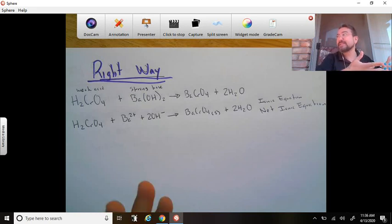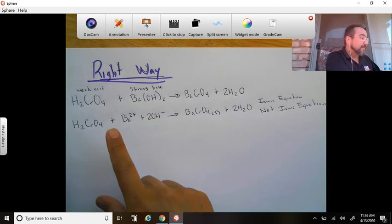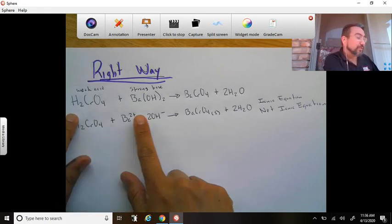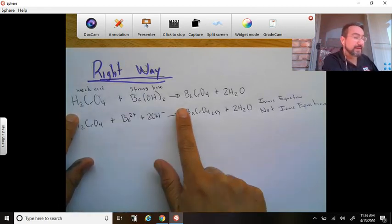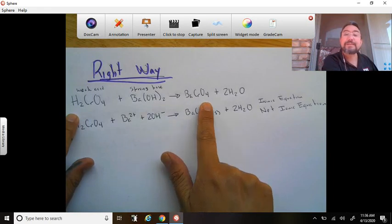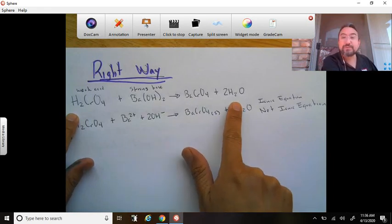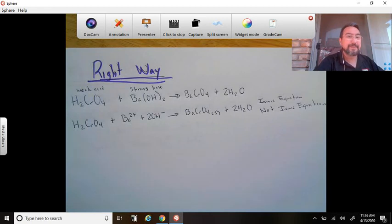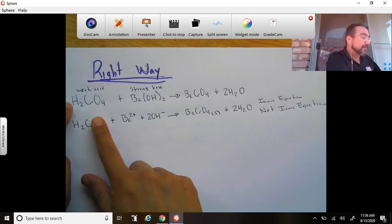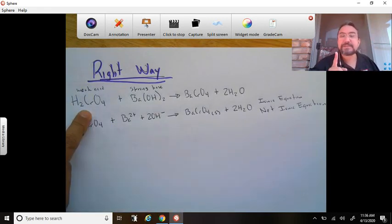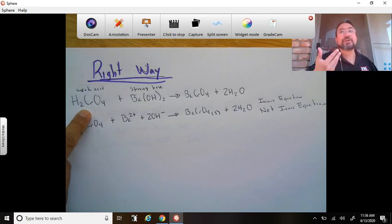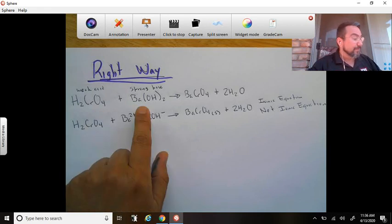So anyway, first the right way. You have chromic acid with barium hydroxide, and that gives you barium chromate plus two molecules of water. That is the reaction. Now we know that chromic acid is a weak acid, and we know it's weak because it's not one of the strong acids. Remember I gave you that list, so it has to be a weak acid. Barium hydroxide, even though it's only slightly soluble, it is a strong base.